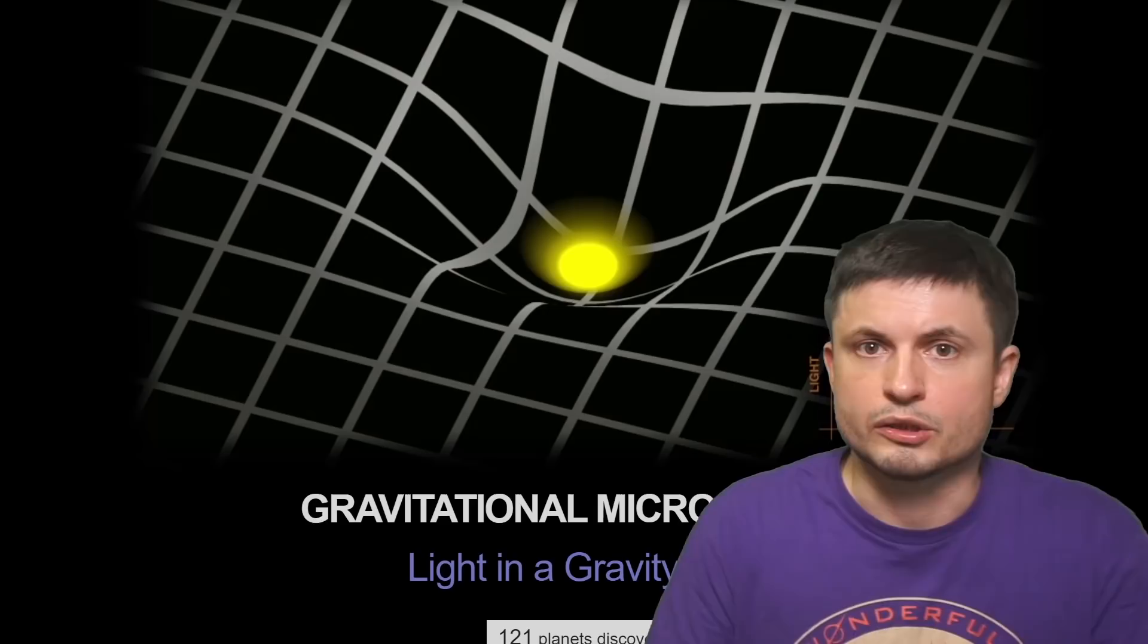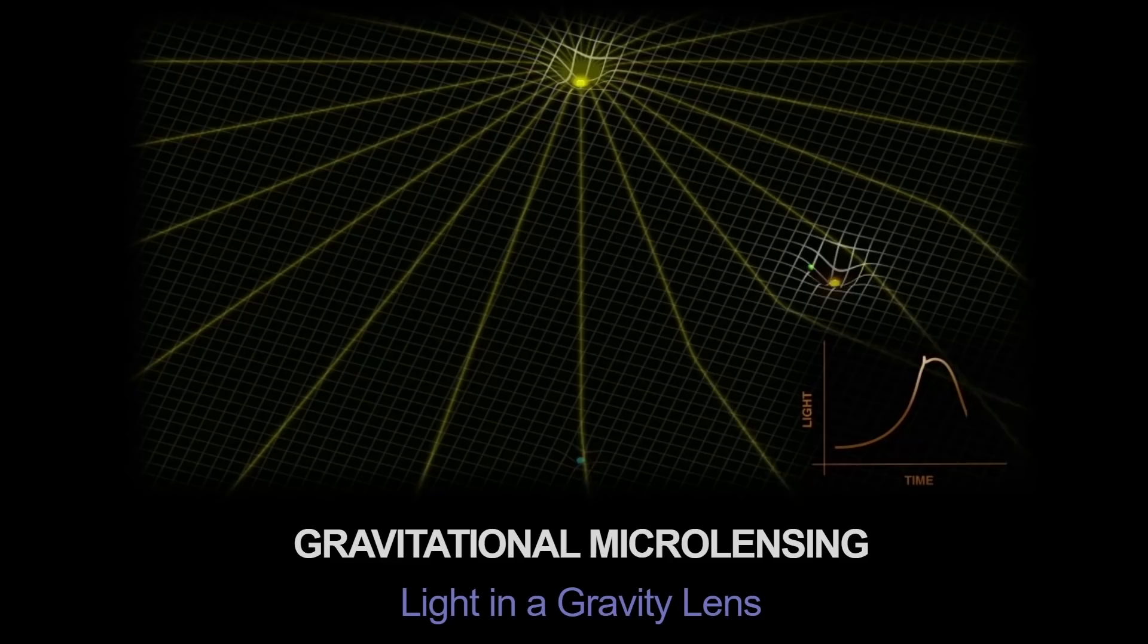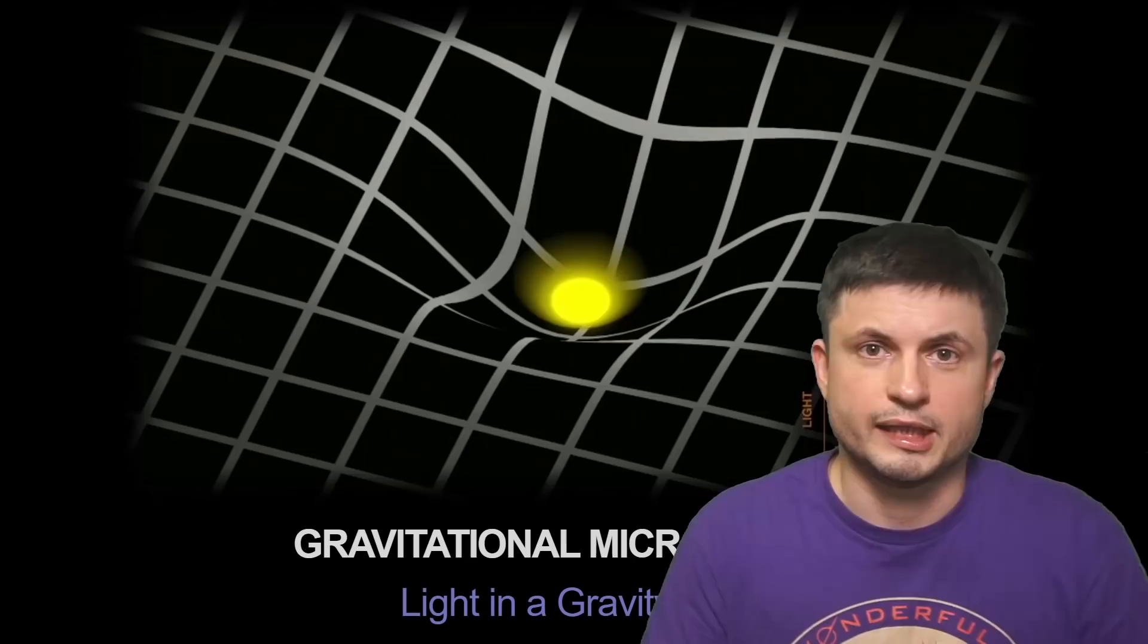On the other hand, it also is possible to find an exomoon, along of course with the exoplanet, using so-called gravitational lensing method. This is basically when an object passes in front of a star, bending the light just a little bit, producing a tiny variation in what we're seeing from the star.